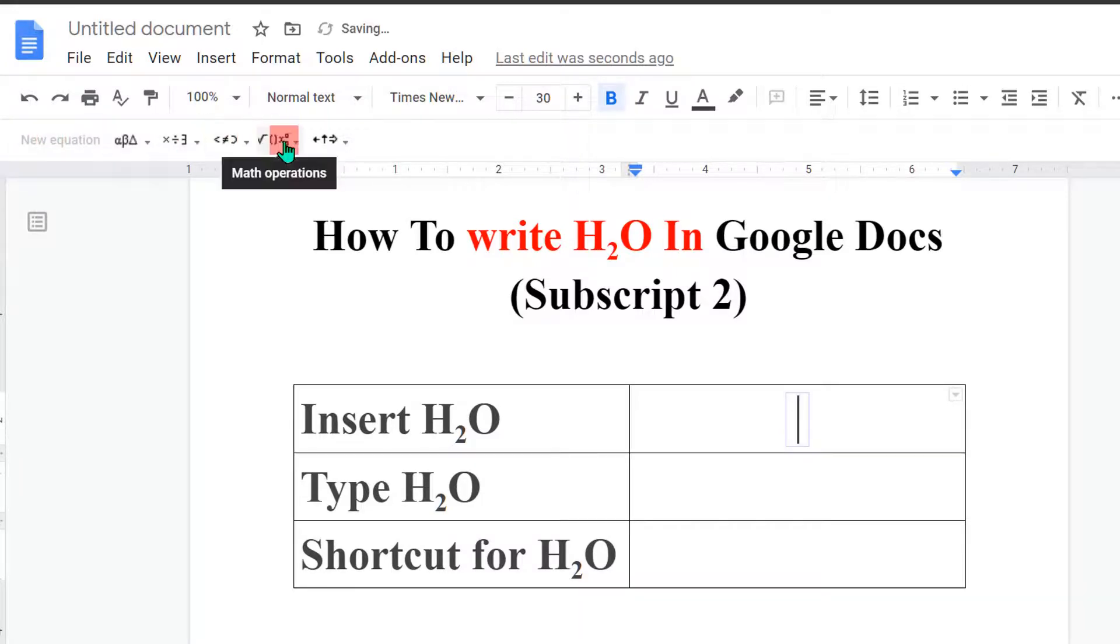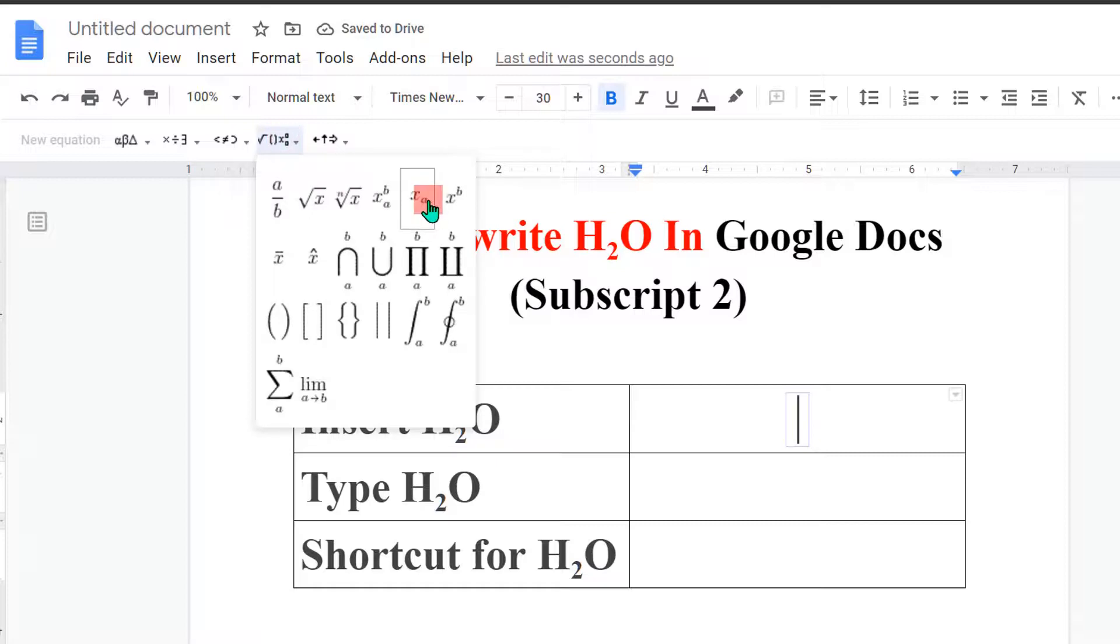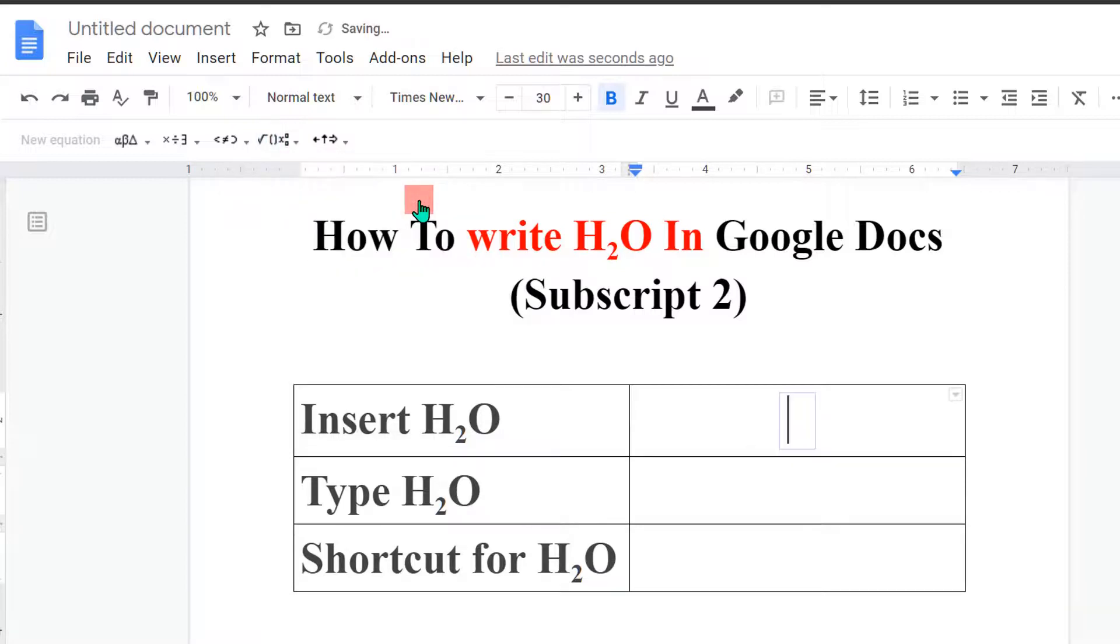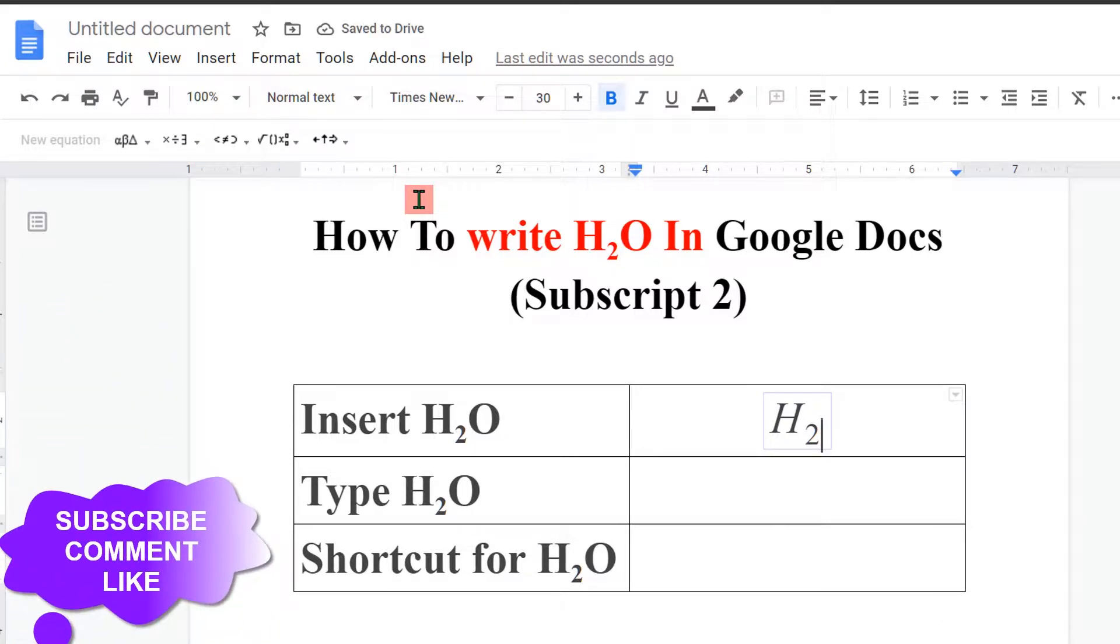Click on Math Operations and select X at the bottom A. Then type H, press forward arrow key on your keyboard, and then type 2. Then again press forward arrow key and type O.